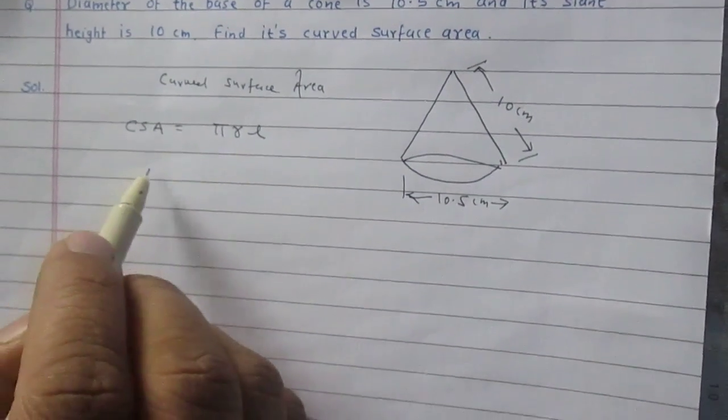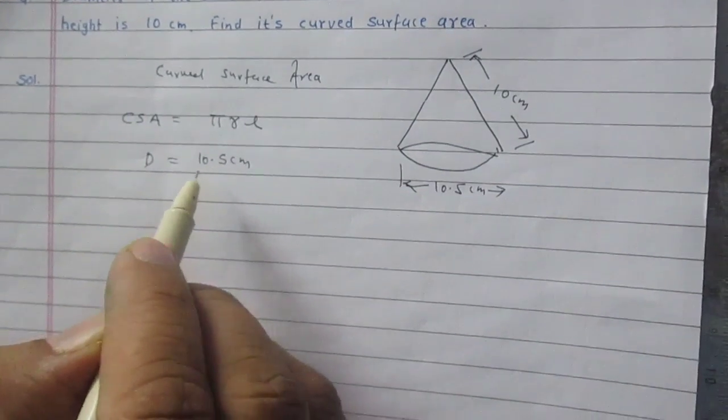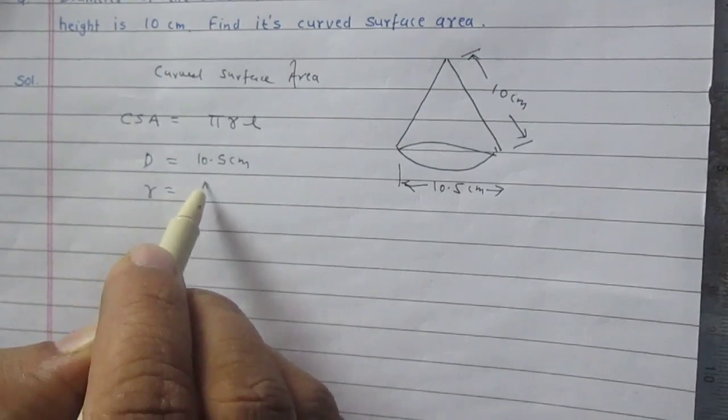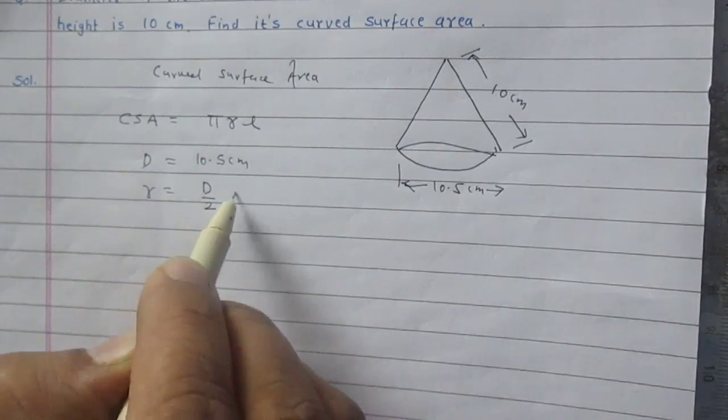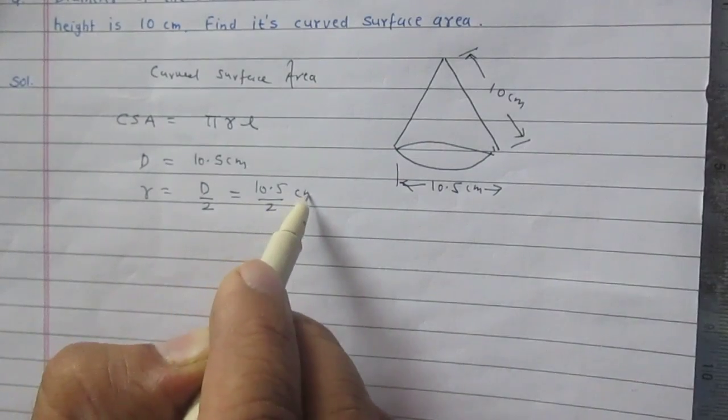We are given that diameter is 10.5 cm, so radius is just half of the diameter, which is 10.5 divided by 2 cm.